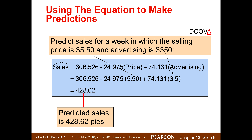Using the equation to make predictions: predict sales for a week where the selling price is $5.50 and advertising is $350. We insert $5.50 for price and 3.5 for advertising — because advertising is in hundreds of dollars, so $350 is 3.5 hundreds. Make sure you multiply first: multiply negative 24.975 by 5.5, then multiply 74.131 by 3.5, then add everything together. Our predicted sales for that week are 428.62 pies.